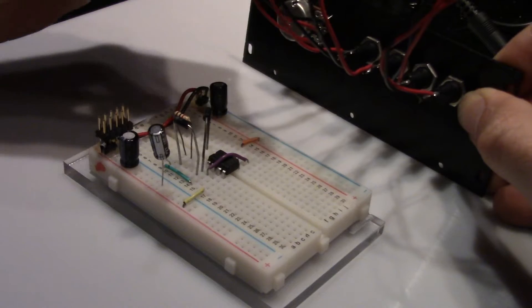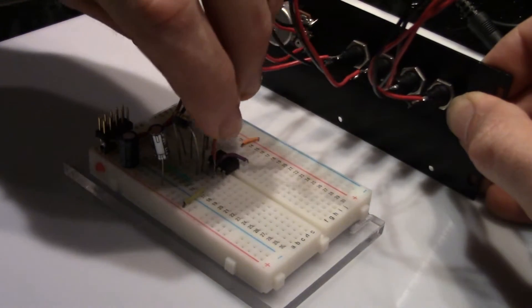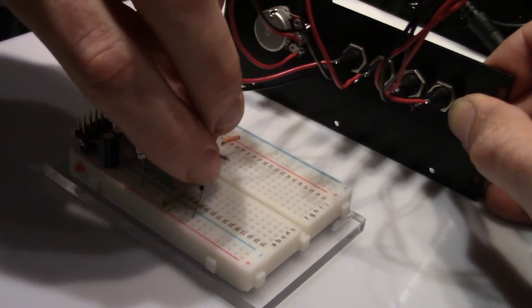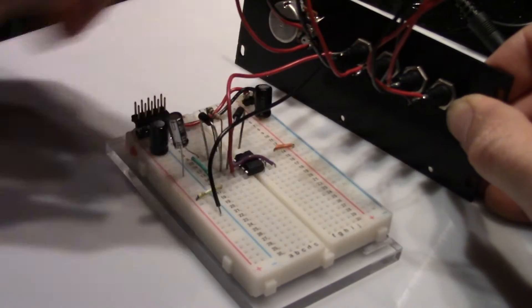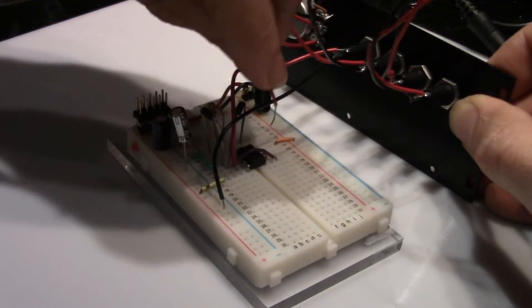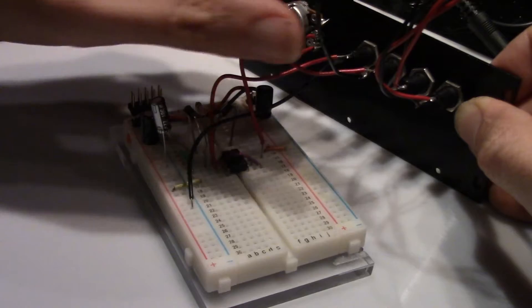Now the front plate can be brought back in. Attach the red wire of the first jack to pin 3 of the chip. Attach the black wire to ground. Next, the red wire on the second jack to pin 7 and the black to ground.